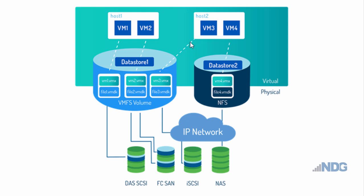Host2 is also accessing Datastore1 via VM3, using an iSCSI network attached storage over the IP network. iSCSI is also block level storage — like directly attached storage and fiber channel SAN — but it travels across the IP network.